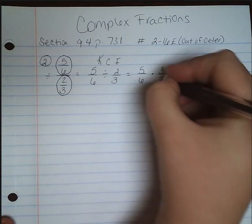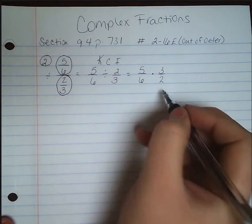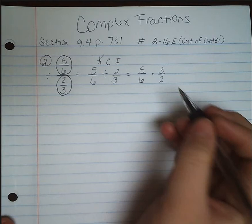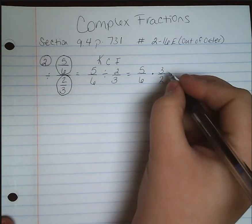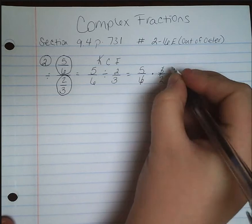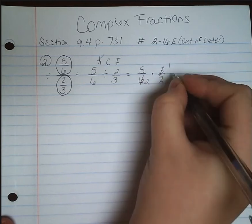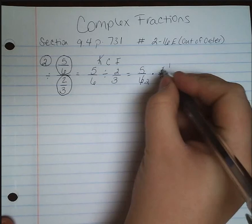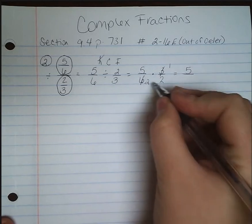We change that division to multiplication, and then we flip that second fraction. So instead of having 2 over 3, we now have 3 over 2. So now we're multiplying, and we can simplify. That 3 and 6 simplify to be a 1 and a 2. So we have 5 times 1 is 5, and 2 times 2 is 4.